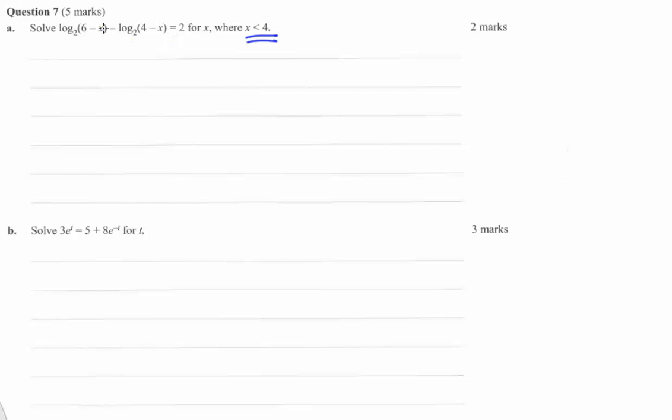Let's simplify this. So we're subtracting two logs, which means we can divide these two quantities. So that's the same as saying log base 2 of (6 minus x) over (4 minus x) equals 2.